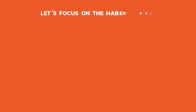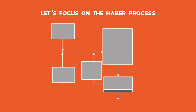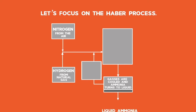Let's focus on the Haber process. Let's recap what we've learnt from the video. Nitrogen from the fractional distillation of air and hydrogen from natural gas is reacted in a closed container to form ammonia.